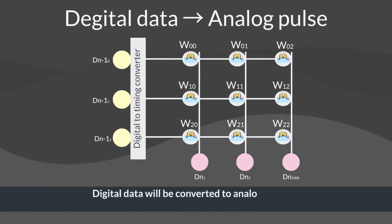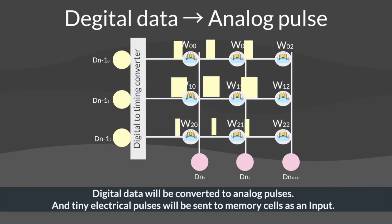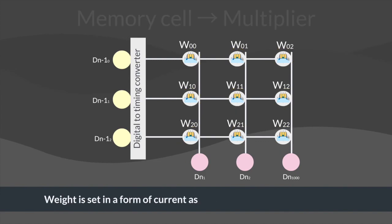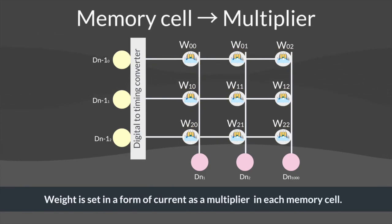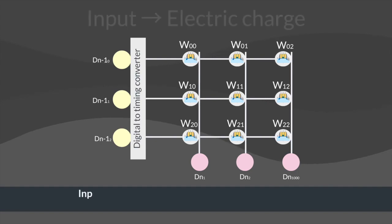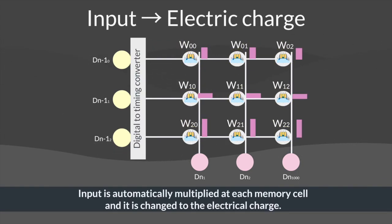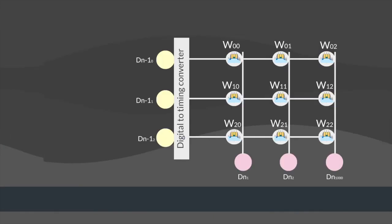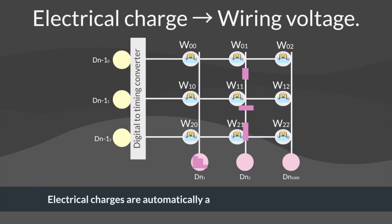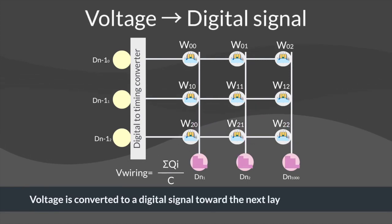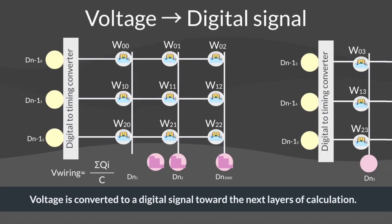Digital data will be converted to analog pulses, and tiny electrical pulses will be sent to memory cells as an input. Weight is set in the form of current as a multiplier in each memory cell. Input is automatically multiplied at each memory cell and is changed to electrical charge. Electrical charges are automatically accumulated as wiring voltage. Voltage is converted to a digital signal toward the next layers of calculation.